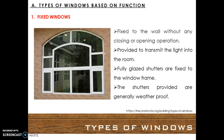Today we shall discuss in detail about windows based on their functions. First is fixed windows. Fixed windows are fixed to the wall without any closing or opening operation. These are provided to transmit light into the room. They have fully glazed shutters fixed to the window frame, and the shutters provided are generally weatherproof.